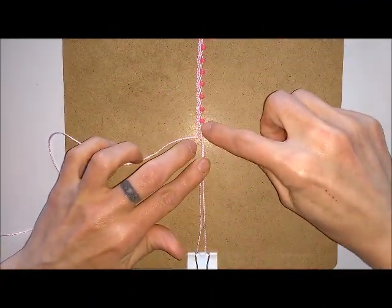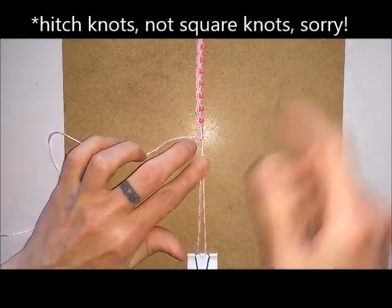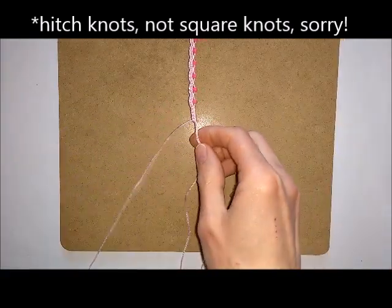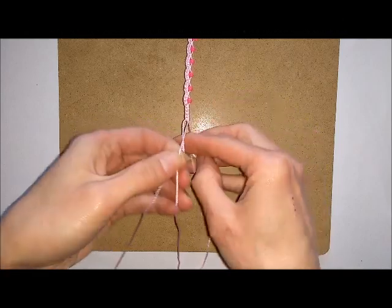Once you've added all your beads, you can do the same amount of square knots that you did at the beginning to make it symmetrical. Then remove the cords from the bottom of the board and finish off by making a braided tie on end.